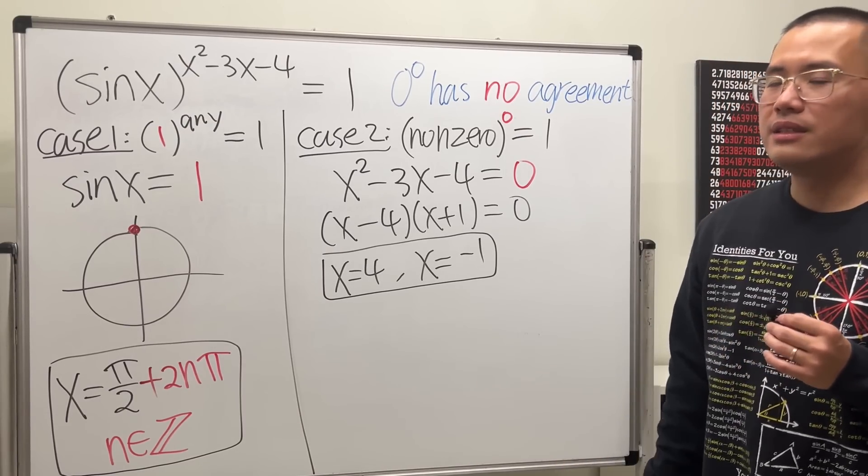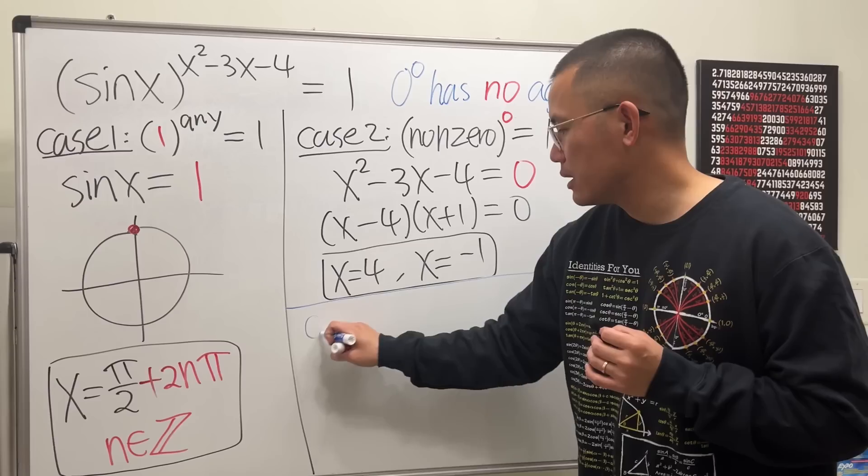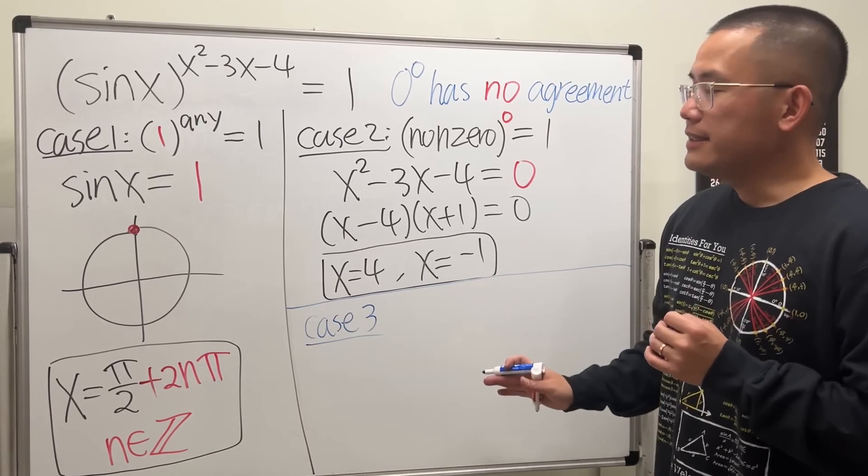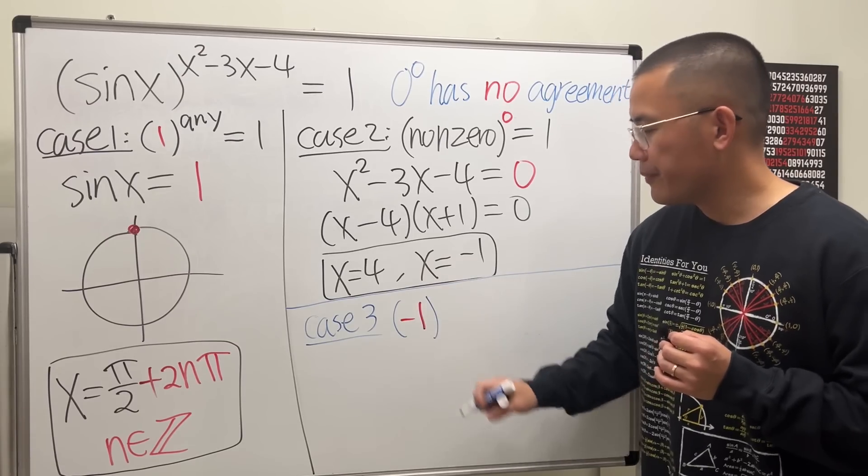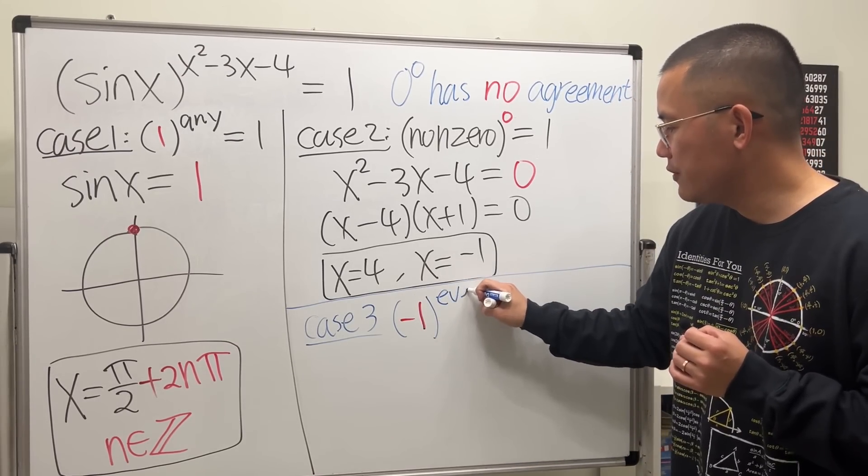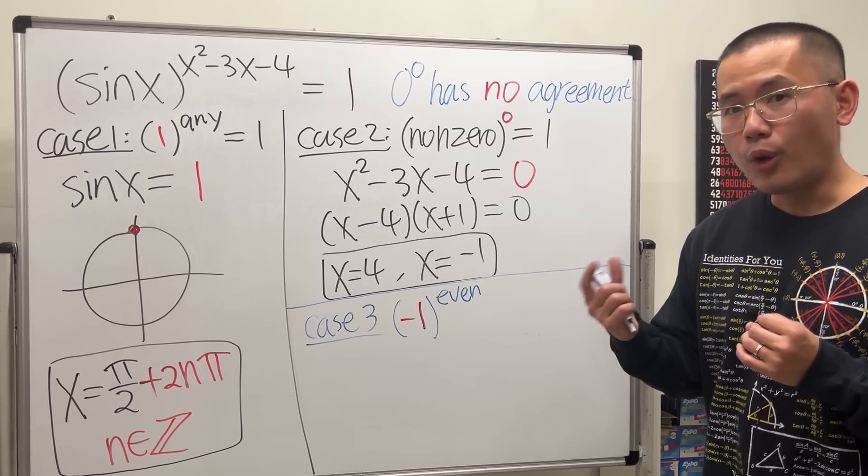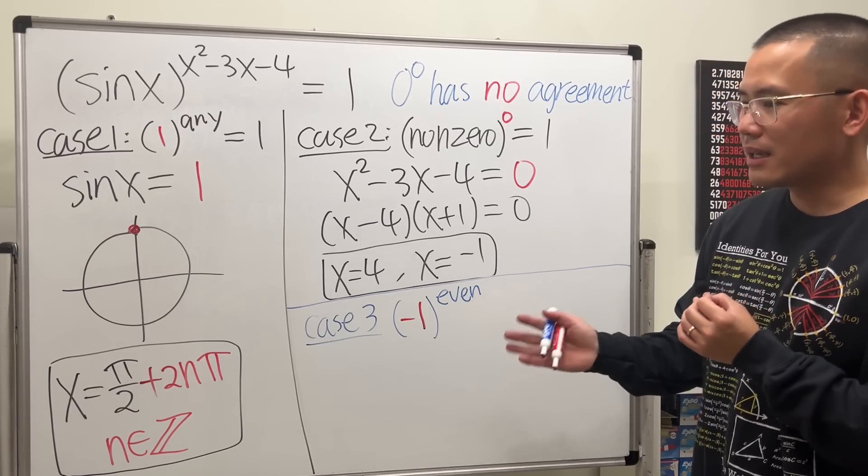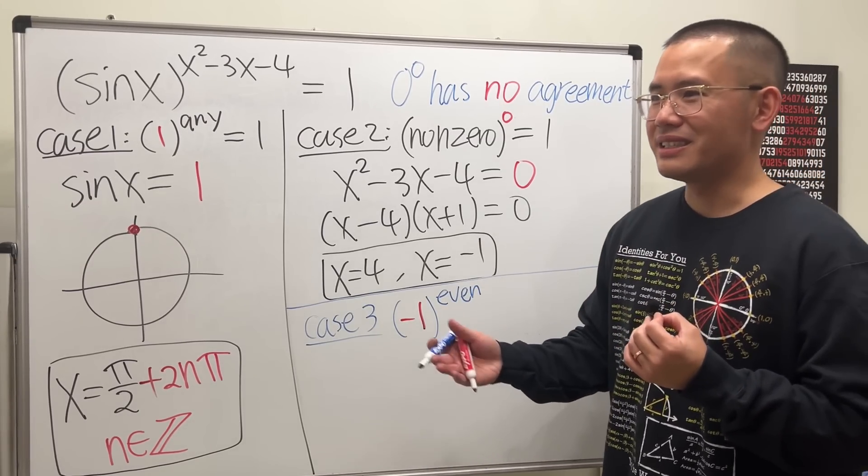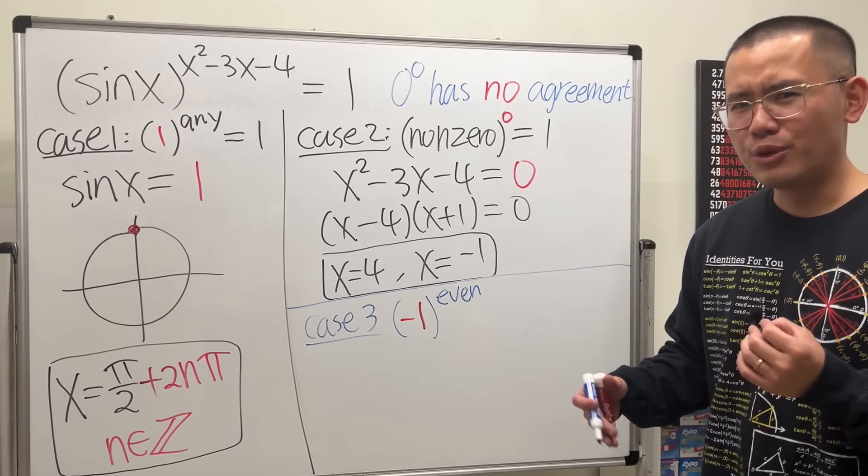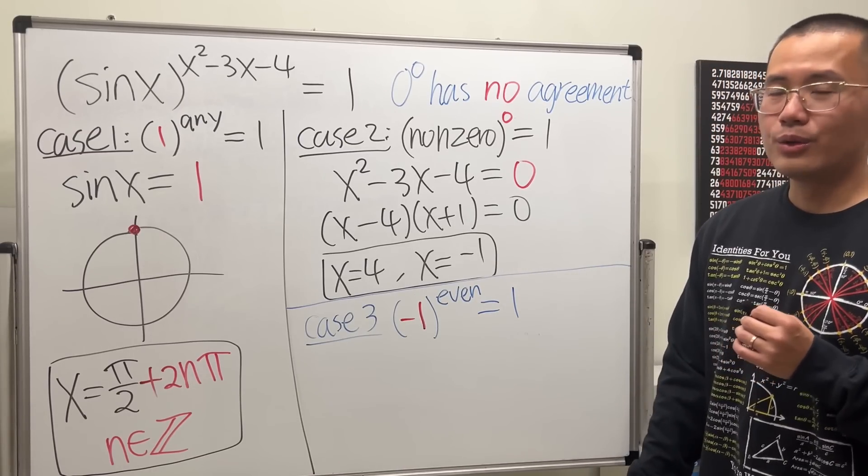Now, this is technically case 3, but it won't happen here. So I will still talk about this right here with you guys. Case 3 is when we have negative 1 for the base, but the power has to be even. And when we mean an even number, it has to be a whole number. It can be positive or it can be negative, but it has to be a whole number. 1 half, well, 2 over 6, they are not even numbers at all. 0.2 is not even either, because they are not even whole numbers.